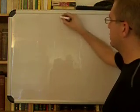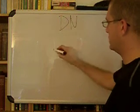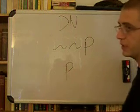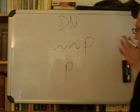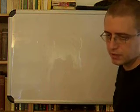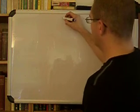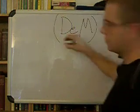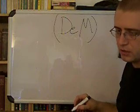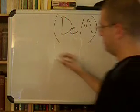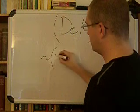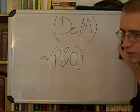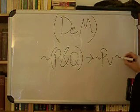The double negation, of course, is very easy: if not not P, then you get P. Or if you have P and you need to negate it twice, you can just do that. Now, De Morgan is an interesting one. Not (P and Q) can turn into not P or not Q.